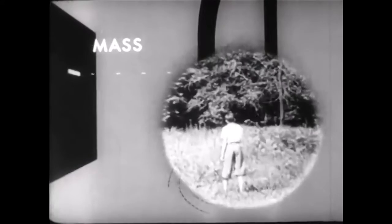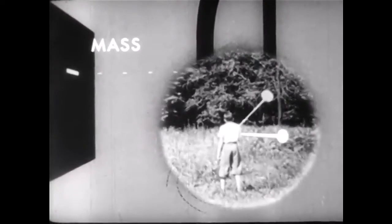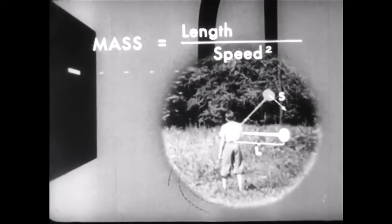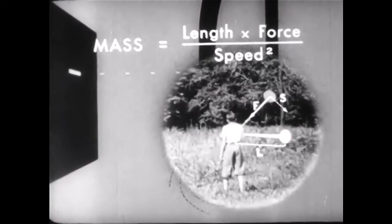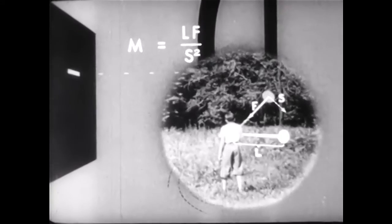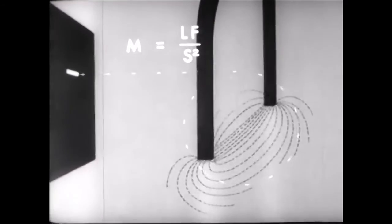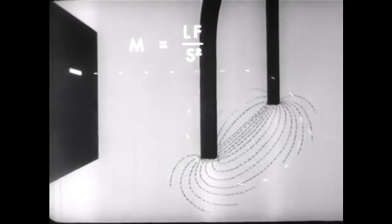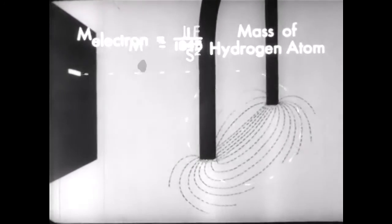Just as it is possible to determine the mass of a stone at the end of a swinging rope, if we know the length of the rope, the speed of the stone, and the force the stone exerts upon the rope, so is it possible to determine the mass of these electrons. This mass has been found to be one eighteen hundred forty-fifth of the mass of a hydrogen atom.